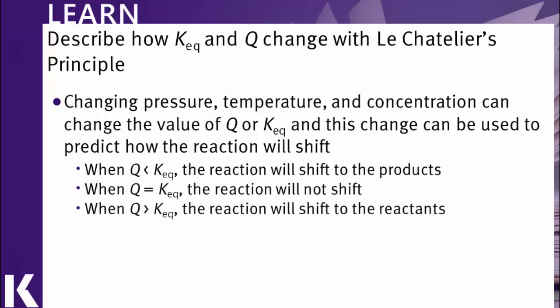If reaction quotient Q is larger than K, that means we have more products or less reactants in our reaction than we would at equilibrium. If that's the case, that means our reaction would shift back toward the reactants.